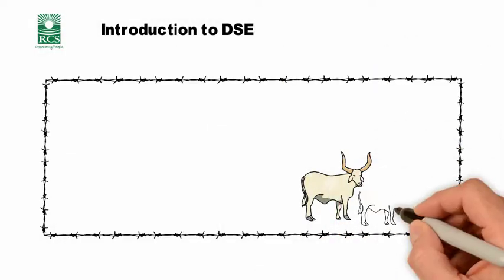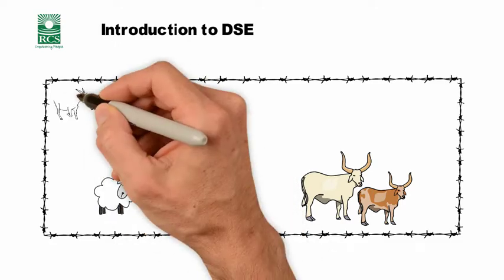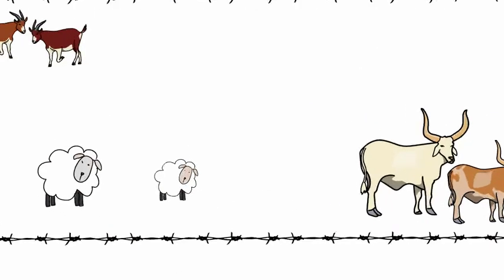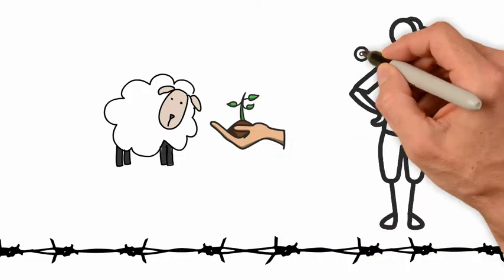Within any property you're going to have different sizes of animals and different types of animals. The question to ask ourselves is how much is each of these animals going to eat?